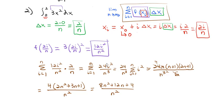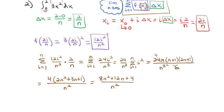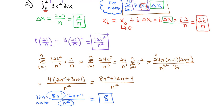We missed one piece: the limit as n goes to infinity. Taking the limit of (8n² + 12n + 4)/n² — since the largest exponents take over — it becomes 8n²/n², which reduces to just 8. So the integral from 0 to 2 of 3x² dx equals 8 square units.